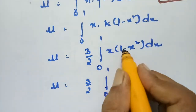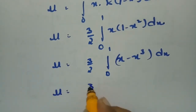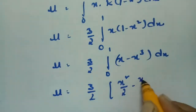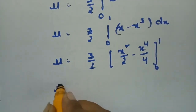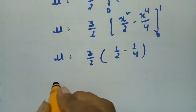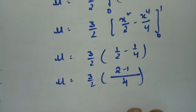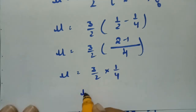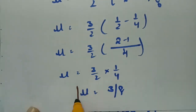Integrating, μ equals 3/2 times [x squared over 2 minus x to the power 4 over 4] from 0 to 1, which gives 3/2 times (1/2 minus 1/4). Taking 4 as LCM gives 3/2 times (2 minus 1)/4 equals 3/2 times 1/4, so the mean μ equals 3/8.